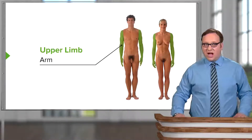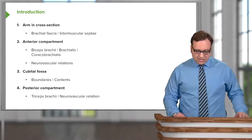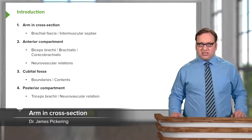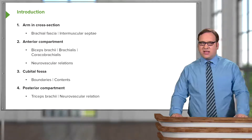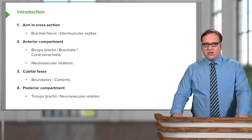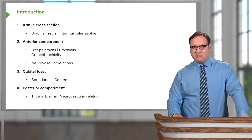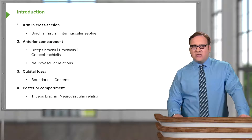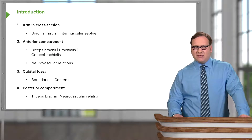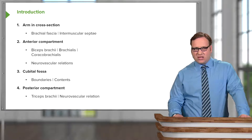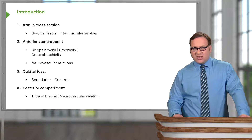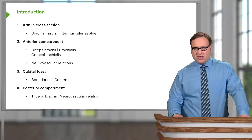In this lecture, we're going to look at the arm. We'll start by looking at the arm in cross-section and returning to the brachial fascia we spoke about. We'll also look at how it forms the intermuscular septa. We'll then look at the anterior compartment — the biceps brachii, brachialis, and coracobrachialis muscles — and some neurovascular relations in the anterior compartment. We'll then look at the cubital fossa that lies directly anterior to the elbow joint, its boundaries and contents, and then finish by looking at the posterior compartment, specifically triceps brachii, and again some neurovascular relations.